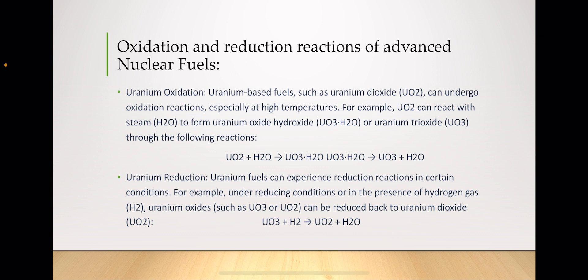Regarding uranium reduction, uranium fuels can experience reduction reactions under certain conditions. For example, under reducing conditions or in the presence of hydrogen gas (H₂), uranium oxides such as uranium trioxide can be reduced back to uranium dioxide. Here you can see the reaction of uranium dioxide with hydrogen gas.